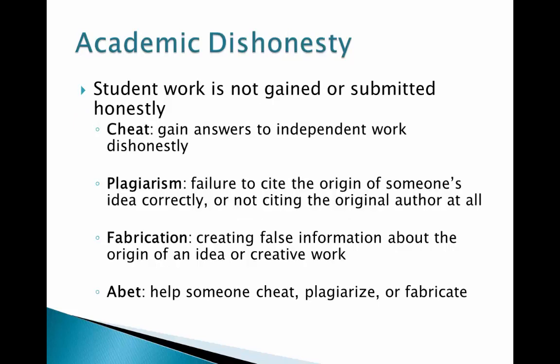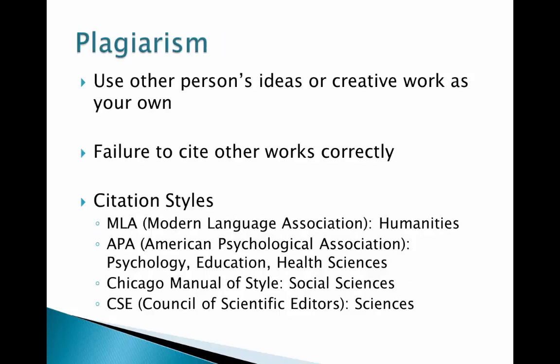There are four main types of academic dishonesty: plagiarism, cheating, fabrication, and abetting. Plagiarism is when you include ideas in your own work from others and do not cite where it came from, or fail to cite it correctly. This often happens in research projects that require students to get information from other sources to back up their claims. Also, submitting a research paper that someone else did is plagiarism.